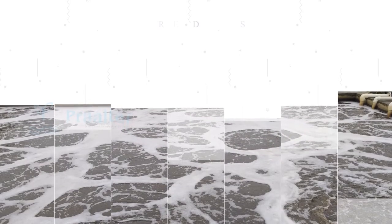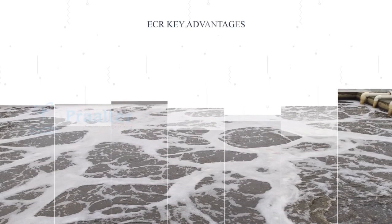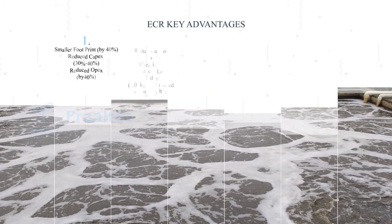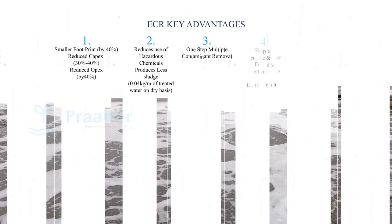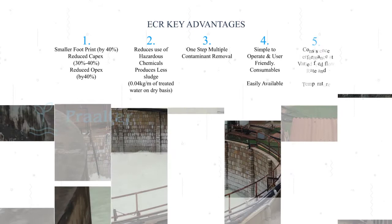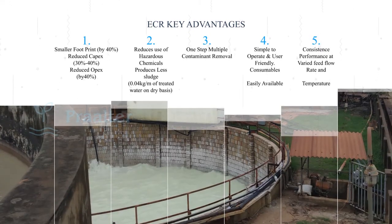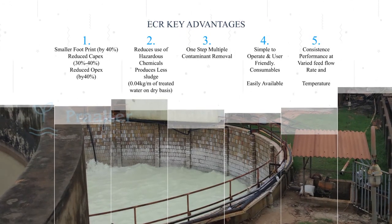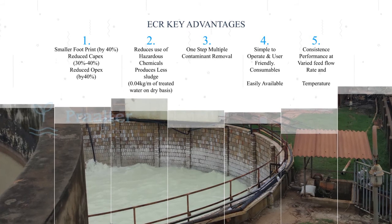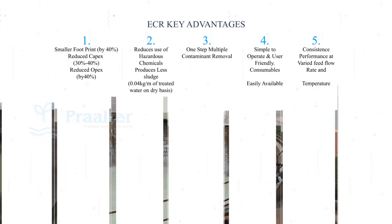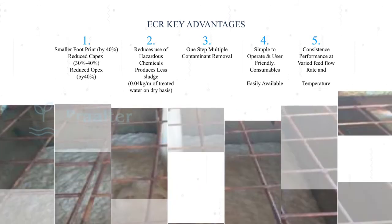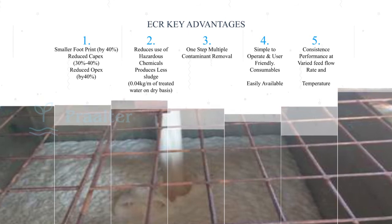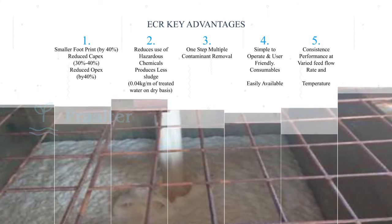Some of the key advantages are: one-stop multi-contaminant removal; no hazardous chemicals are used; reduced sludge at about 0.04 kg per cubic meter on a dry basis; reduced footprint to an extent of 40% as no large equipment is involved due to instant treatment reaction; and reduced operating cost of about 40%.